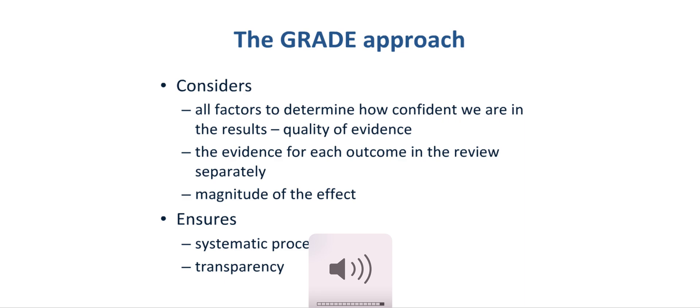To remind those conducting systematic reviews as well as those interpreting systematic reviews, the GRADE approach systematically presents the factors that are important when interpreting evidence and results. It makes us consider the evidence for each outcome because the evidence can be different for each outcome. For instance, the number of studies contributing to an outcome can differ as well as the underlying quality of the evidence for each outcome.